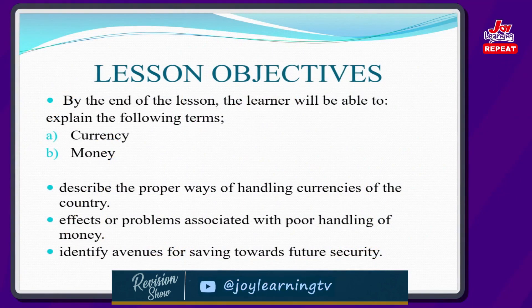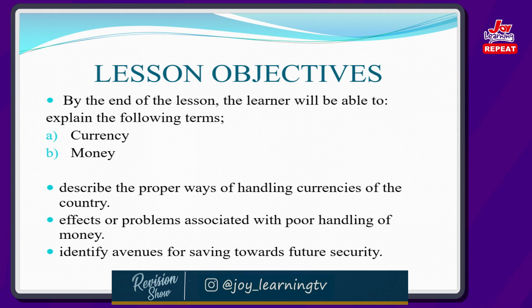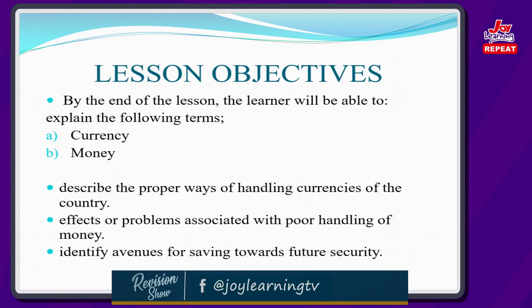The objectives are simple and straightforward. By the end of the lesson, you, the learner, will be able to explain the following terms: 1. Currency, 2. Money. Then also describe the proper ways of handling currencies of the country and the effects or problems associated with poor handling of money. And the last point is to identify avenues of saving towards future security.